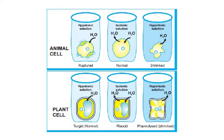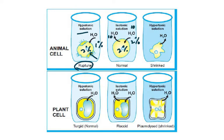In animal cells, placing them in a hypotonic solution — 2% inside, 1% outside — causes water to move in and the cell ruptures, because there is no cell wall. In an isotonic solution (2% inside, 2% outside), there is no net movement — 10 molecules entering and 10 leaving — so the cell remains normal. In a hypertonic solution (2% inside, 3% outside), water moves out and the cell shrinks.